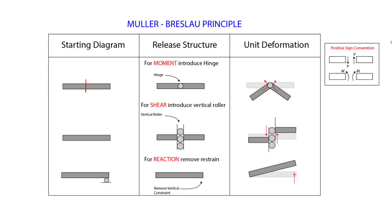You just introduce a hinge, so we know we will have rotation. The hinge will separate out this piece and this piece — essentially we broke up the beam into two pieces with some rotation. That's what we do by adding a hinge for a moment: we always release the structure by introducing a hinge at the particular location. We then apply a unit deformation, which here is a rotation. On each side it's 0.5, so the total angle is 1.